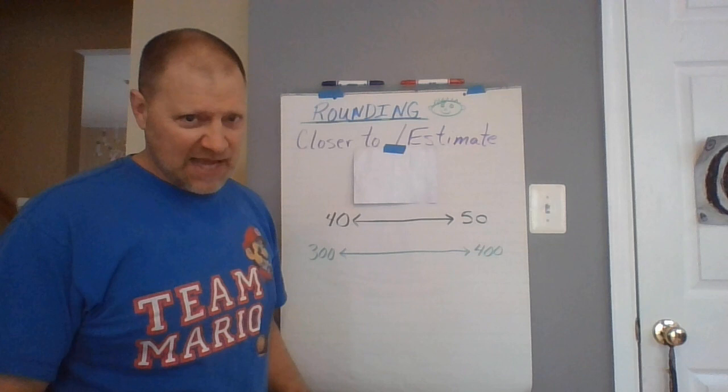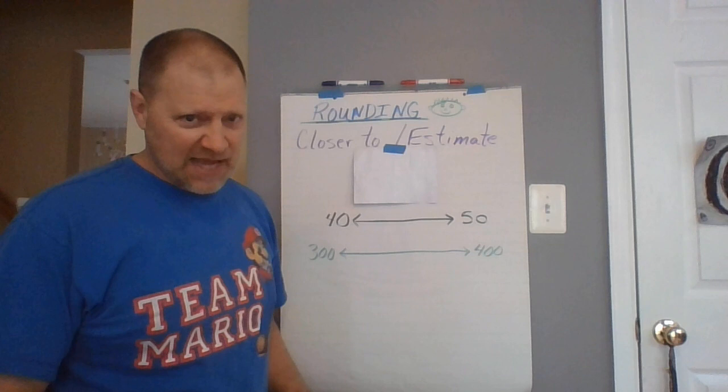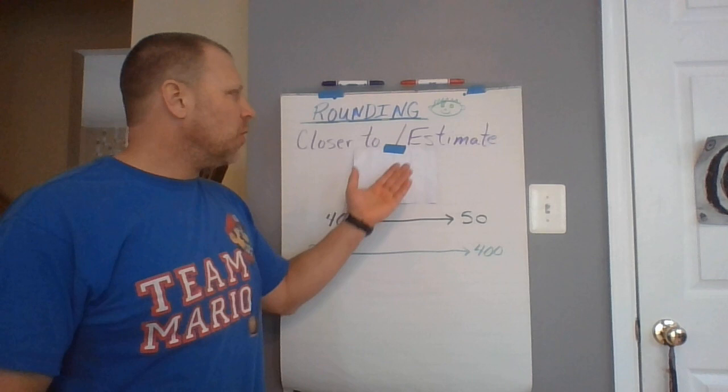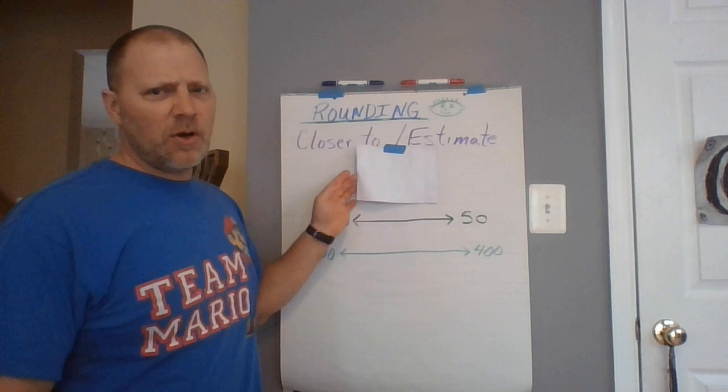But what is rounding? Well, rounding is pretty cool. Because when you round, you don't have to be exact. You're looking for numbers that are closer to a certain number or numbers that are an estimate. And there's that key word, Andrew Strandberg, that I have hidden right here. That word, it means estimate. And it is?